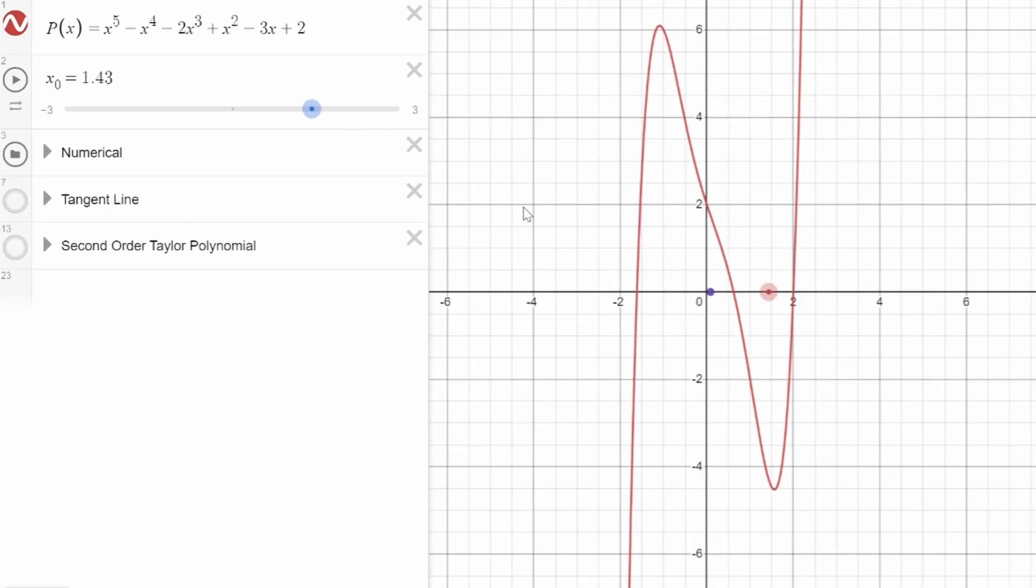You might ask, why do we need this method at all? Can't you just look at where the red line crosses the x-axis to find the roots? But you have to remember that Desmos is doing millions of calculations to be able to plot this graph, which no human in Isaac Newton's time could do.